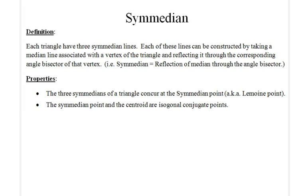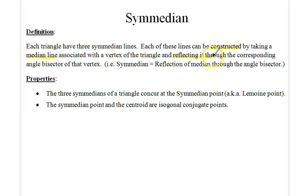In this lecture we will go over the topic of the symmedian from geometry. Each triangle has three symmedian lines. Each of these lines is constructed by taking one of the median lines — which goes through a vertex to the midpoint of the opposite side — and reflecting that median line across the angle bisector of that vertex. That gives the symmedian associated with that median.